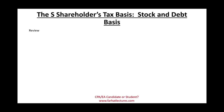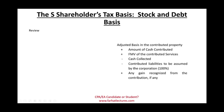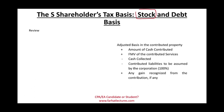Welcome to this session in which we will discuss the S shareholder stock basis, which is composed of their stock basis and their debt basis. Let's review what we know about the stock basis from a prior session. The stock basis is established when the shareholder contributes property — we use the adjusted basis of that property. The shareholder might also contribute cash, which increases the stock basis, or contribute services, using the fair market value of those services to increase the stock basis.